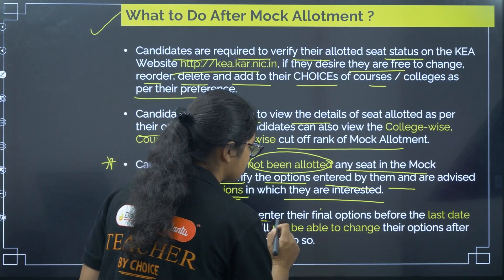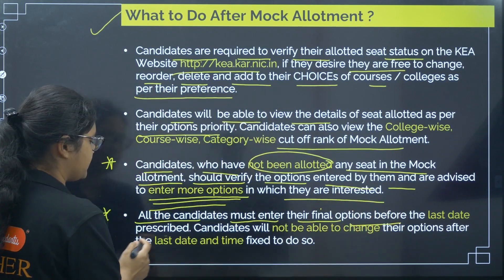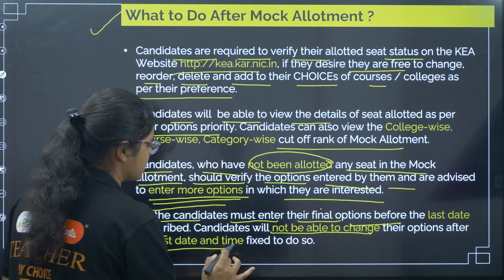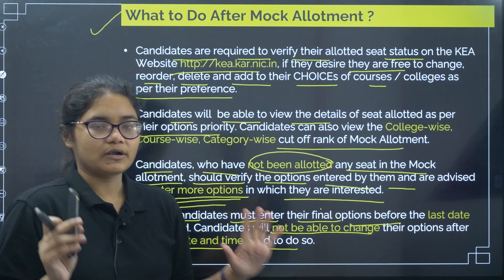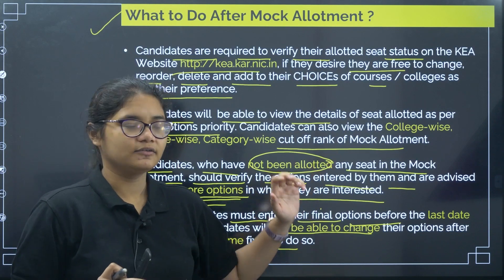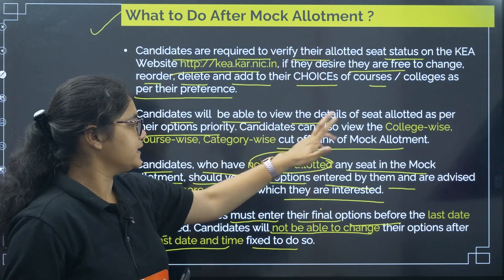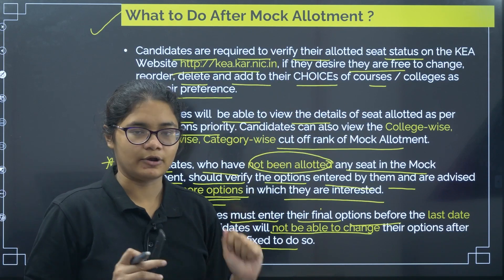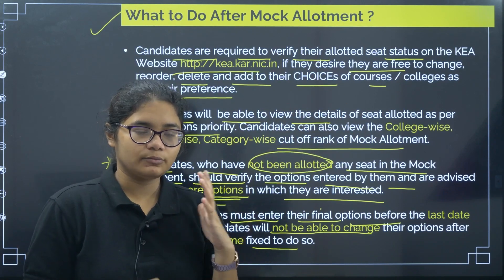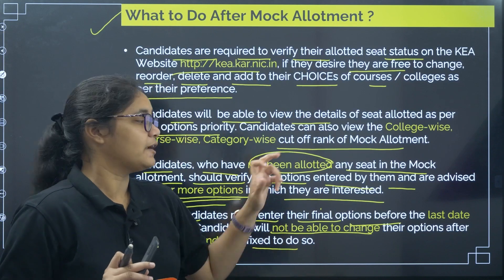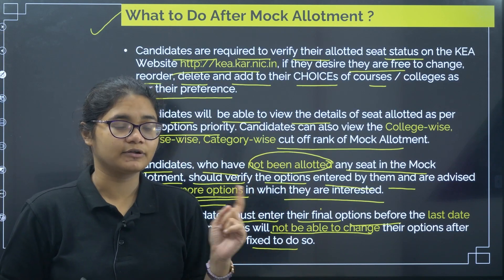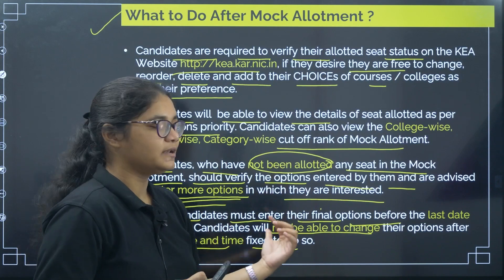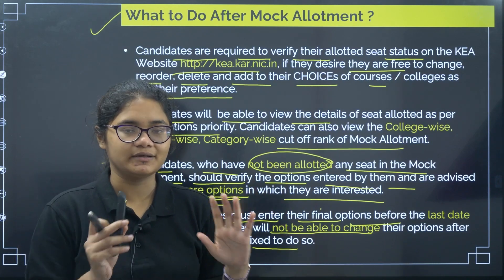All candidates must enter their final options before the last date prescribed. Candidates will not be able to change their options after the last date and time fixed to do so. So after the mock allotment, first check it, then check the college code, course code, category, and which preference you have been allotted. Then decide whether to make any changes or to keep it. For students who did not get any seat, they must add more options and finalize their options by the last date and time fixed.